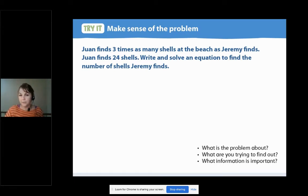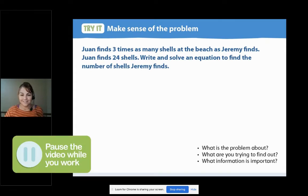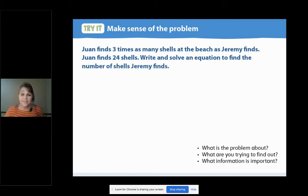Now I want you to read it the third time and I want you to write down what the important information is. You can pause now. For the important information, did you have something like Juan finds 24 shells and that 24 is three times as many as Jeremy finds? Great work.